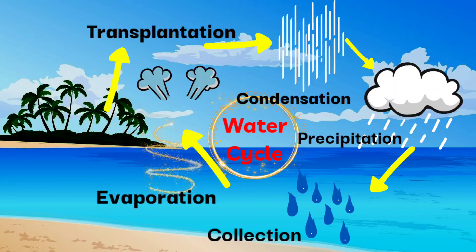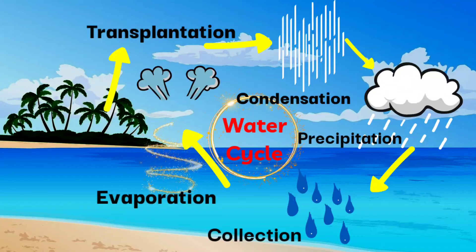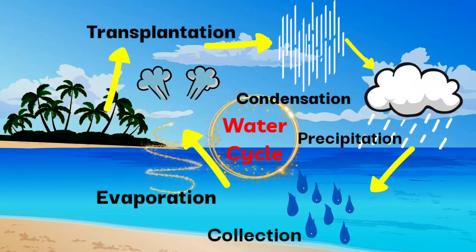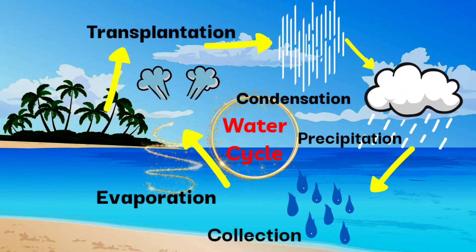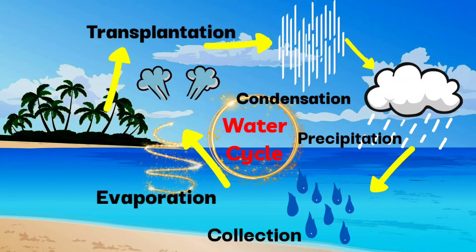These clouds cool down due to the cool air. Water vapor turns into little droplets — this is called condensation. When water drops fall from clouds, it is called precipitation or rain.